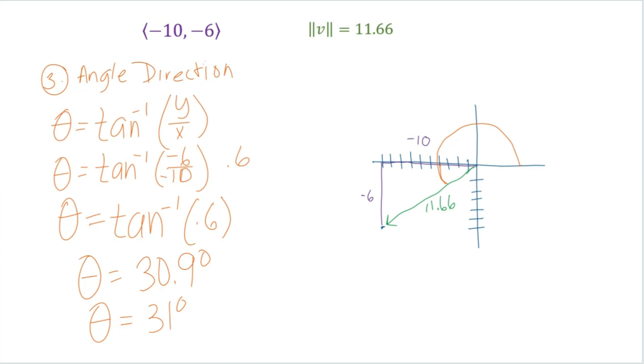So this here is 31 degrees. But since we're in the third quadrant, we have to add the 180 degrees plus 31 degrees. And that is going to give us 211 degrees is our angle direction.